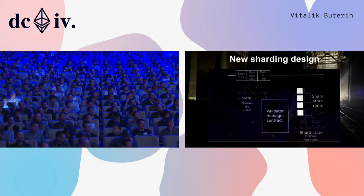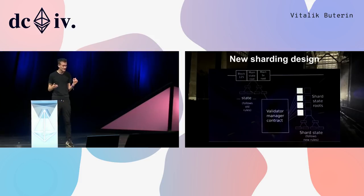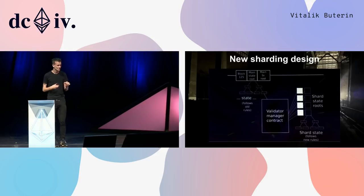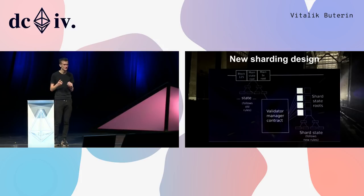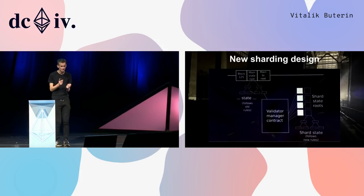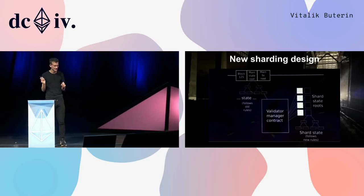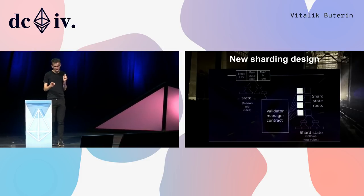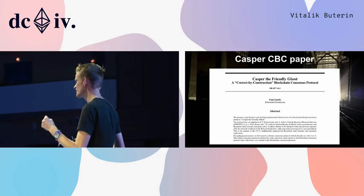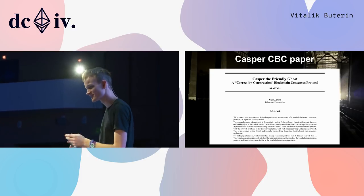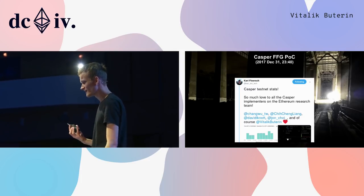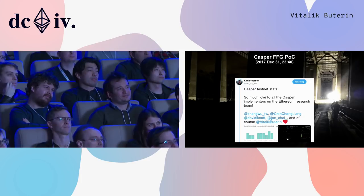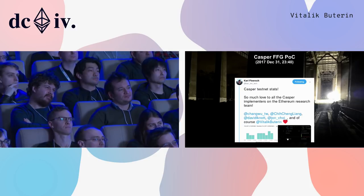Last year at Devcon I presented a new sharding design that kept the main chain and did sharding as a kind of layer-two system on top of the existing main chain, intended to be upgraded to layer one once solid enough. From Vlad came the Casper CBC paper, and there was also the Casper FFG proof of concept. On December 31st, 2017 at 23:40 Bangkok time — because we happened to be in Thailand — we pretty much nailed down the spec for a version of hybrid proof of stake.